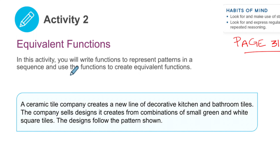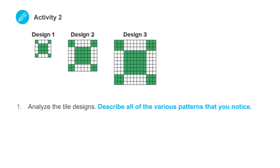That's a big topic in topic one: patterns. A ceramic tile company creates a new line of decorative kitchen and bathroom tiles. The company sells designs it creates from combinations of small green and white square tiles. Here is the design you can see in your book. We have some green and whites. The first question: pause the video and describe all of the various patterns you notice.